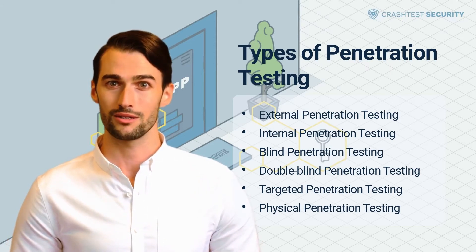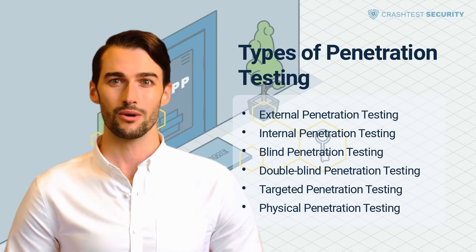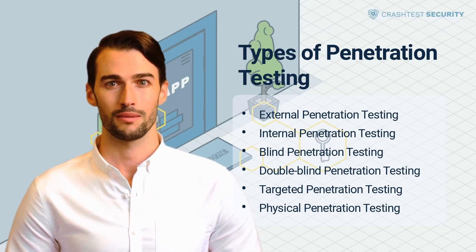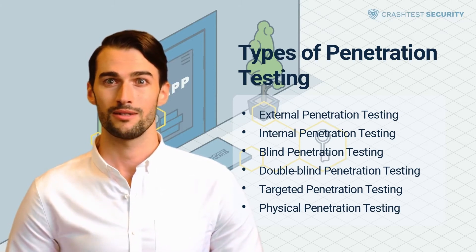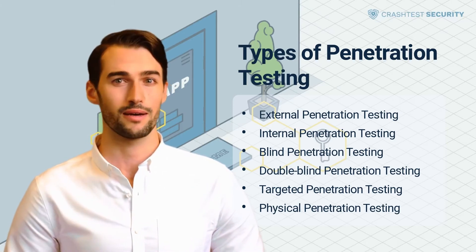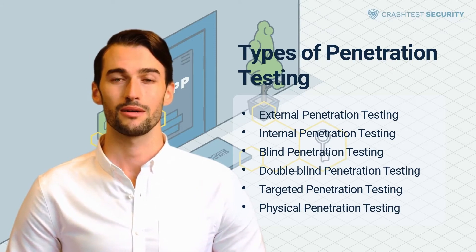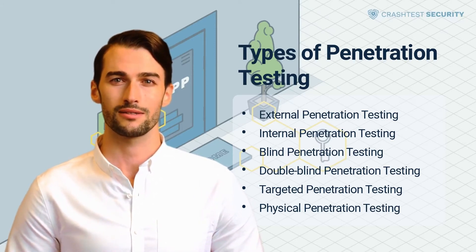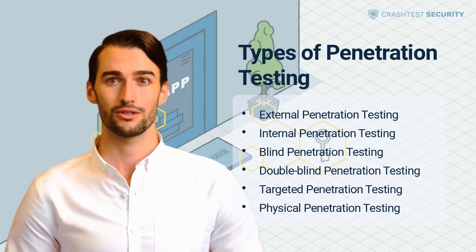Blind Penetration Testing: In such tests, the ethical hacker is only given the enterprise's name, whose systems they are testing, with no background information. Also known as the Closed Box Penetration Test, this type provides software teams with a real-time simulation of how a malicious threat actor gains entry into the system. This type of pentesting can require considerable time for reconnaissance and can be costly.